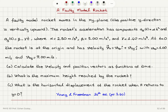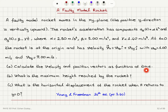At t = 0, the rocket is at the origin and has velocity v₀ = v₀ₓ î + v₀ᵧ ĵ, with v₀ₓ = 1.00 m/s and v₀ᵧ = 7.00 m/s. Part A: calculate the velocity and position vectors as functions of time. Part B: what is the maximum height reached by the rocket? Part C: what is the horizontal displacement when it returns to y = 0?